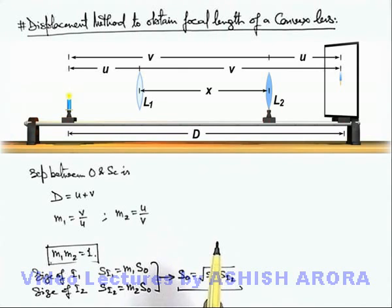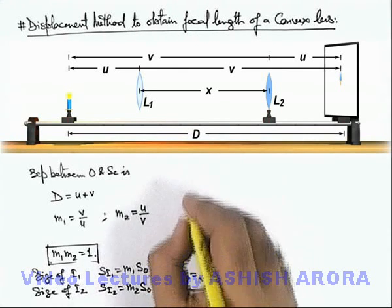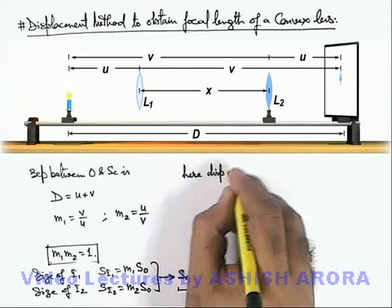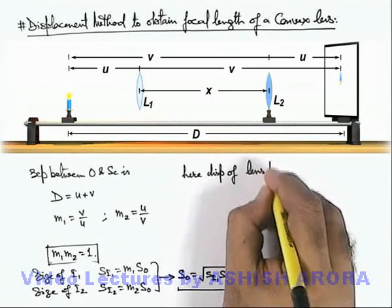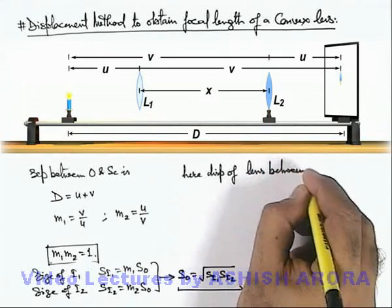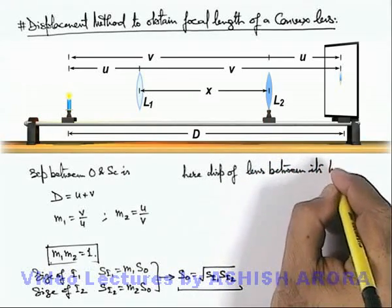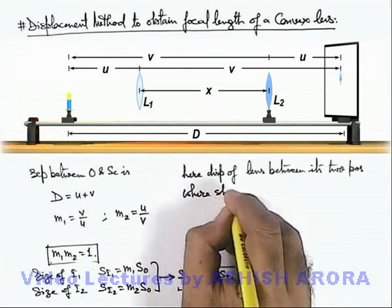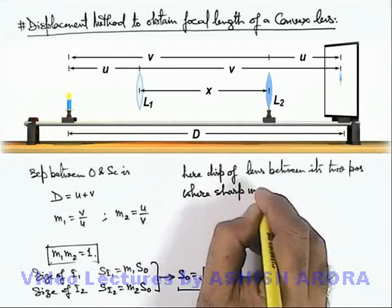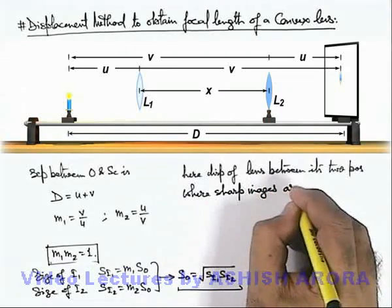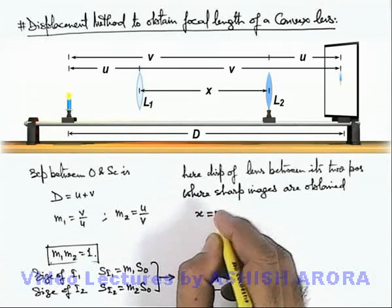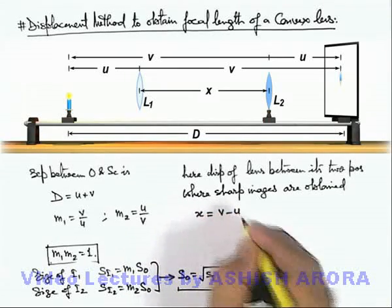Now another point which we can see here is if lens displacement is taken to be x. Then here, displacement of lens between its 2 positions where sharp images are obtained, this we can write as x and here numerically it'll be equal to v minus u.